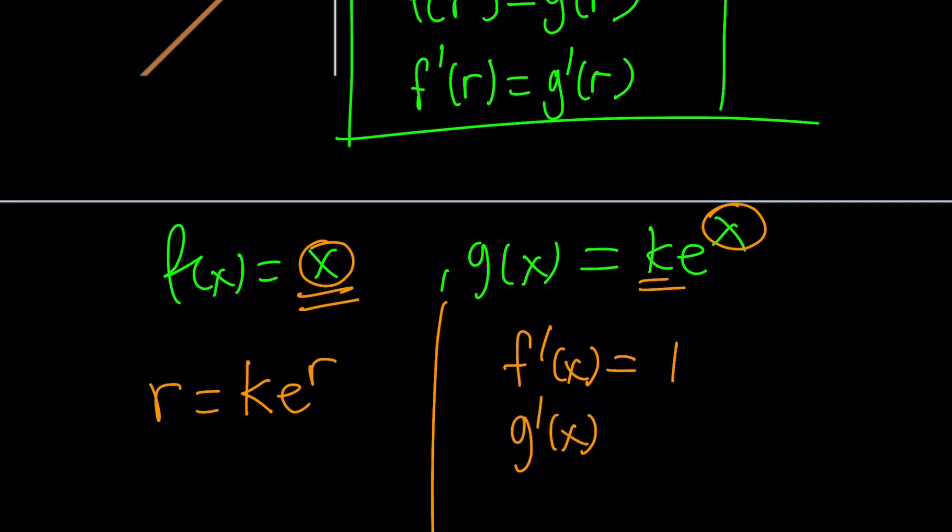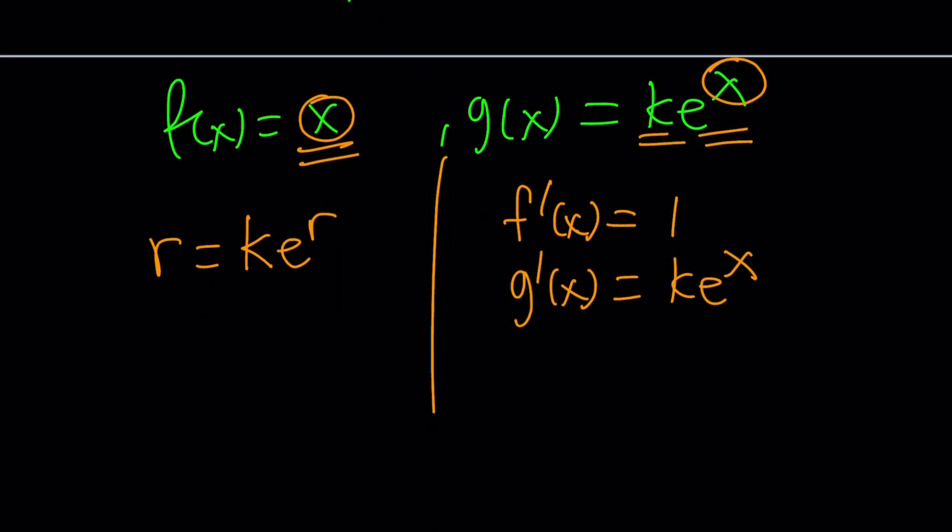And then g prime is, the derivative of e to the x is the same, so it's just going to be k e to the x, which is the same. But then when you replace x with r, f prime of r is just going to be 1, right? From here. And g prime at r is just going to be k e to the r.